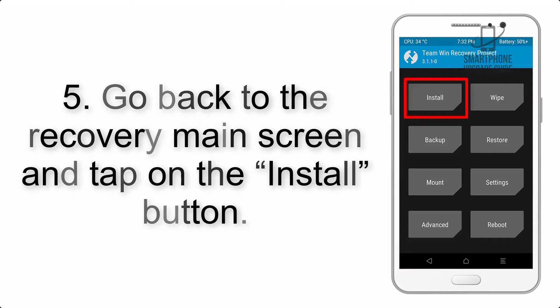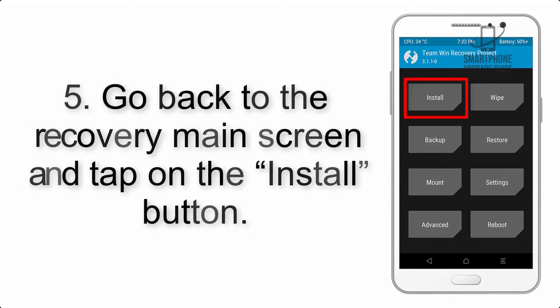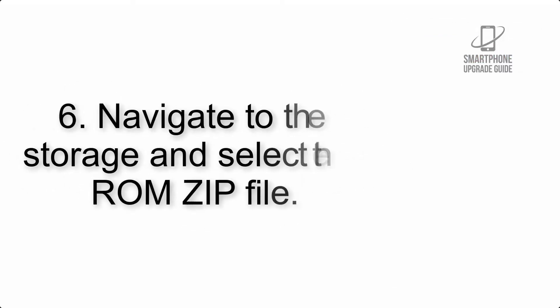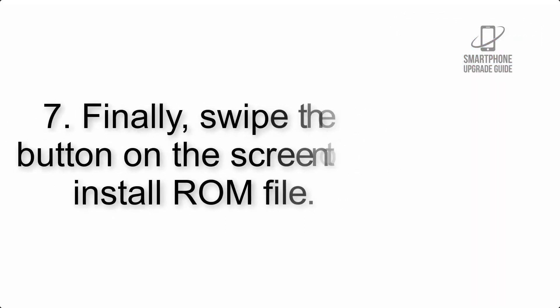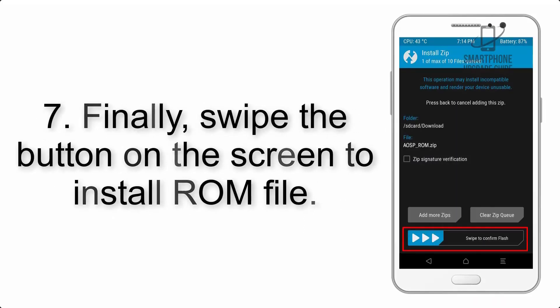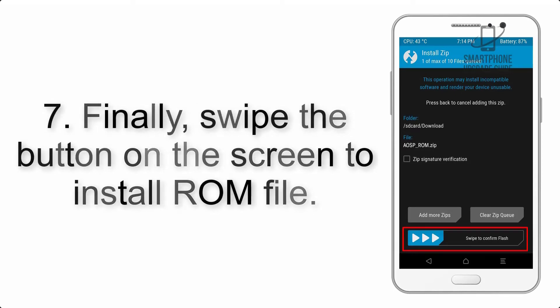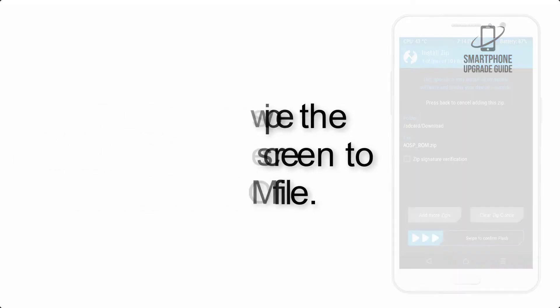Step 5: Go back to the recovery main screen and tap on the Install button. Step 6: Navigate to the storage and select the ROM zip file. Step 7: Finally, swipe the button on the screen to install the ROM file.